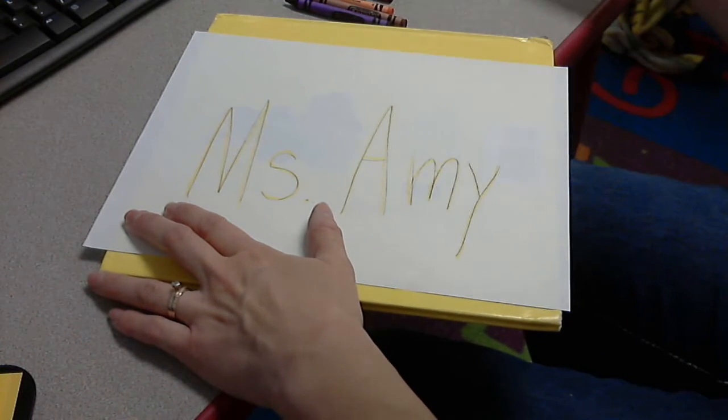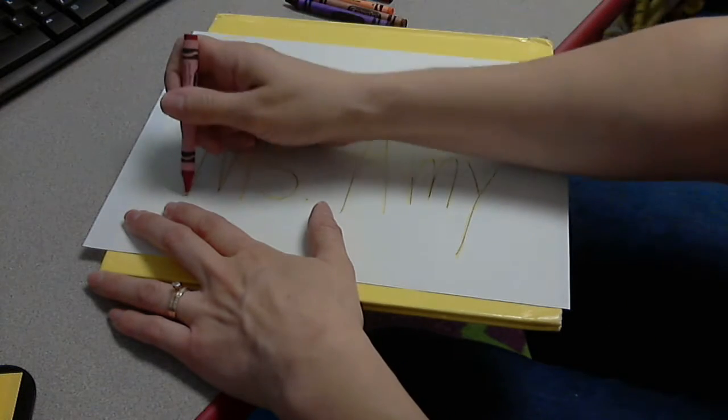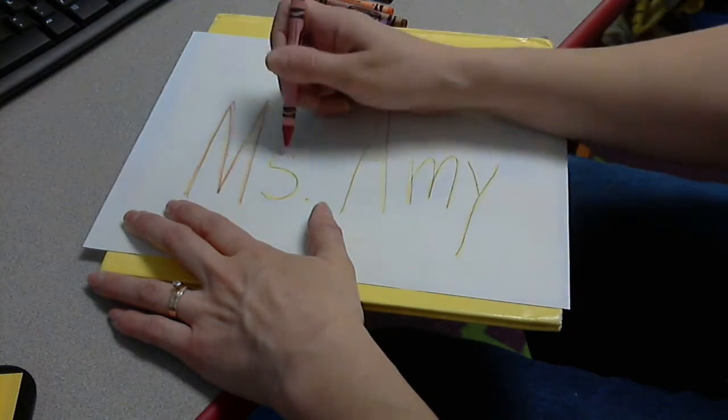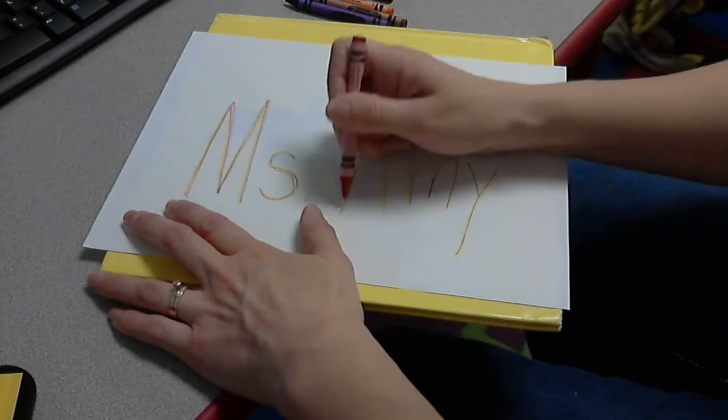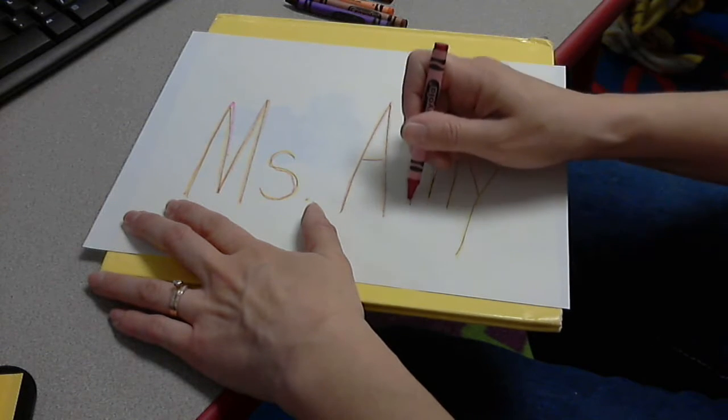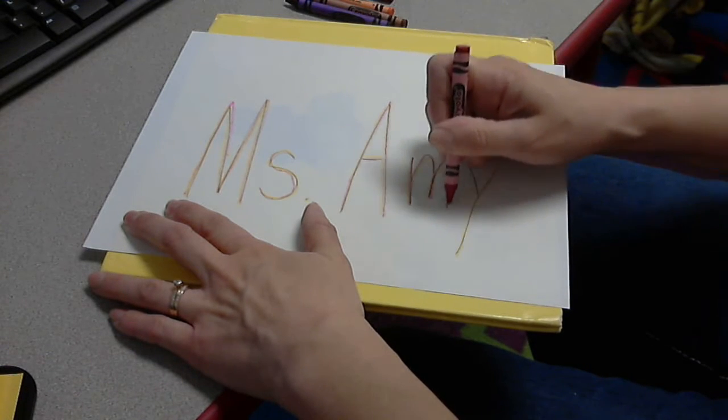Next you can do red. And you trace over the pencil you made where you also had the yellow, tracing over it. So now each letter has two colors on it.